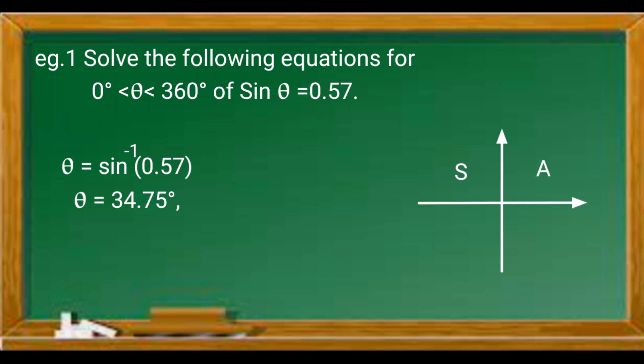So we can sketch a quadrant and remember all school teachers curse. Sine is positive in the second quadrant. So that's 180 minus 34.75. So theta will be 145.25 and also 34.75.